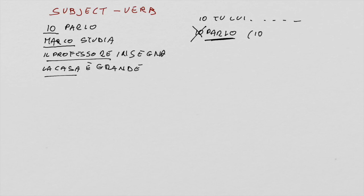Subject pronouns are often dropped because the conjugated verb already makes the subject clear. For example, instead of 'io parlo', you can omit 'io' since 'parlo' is already conjugated to show the subject can only be 'io'. Unlike English, Italian generally keeps the same subject-verb order even in questions — you simply add a question mark and change the voice intonation.